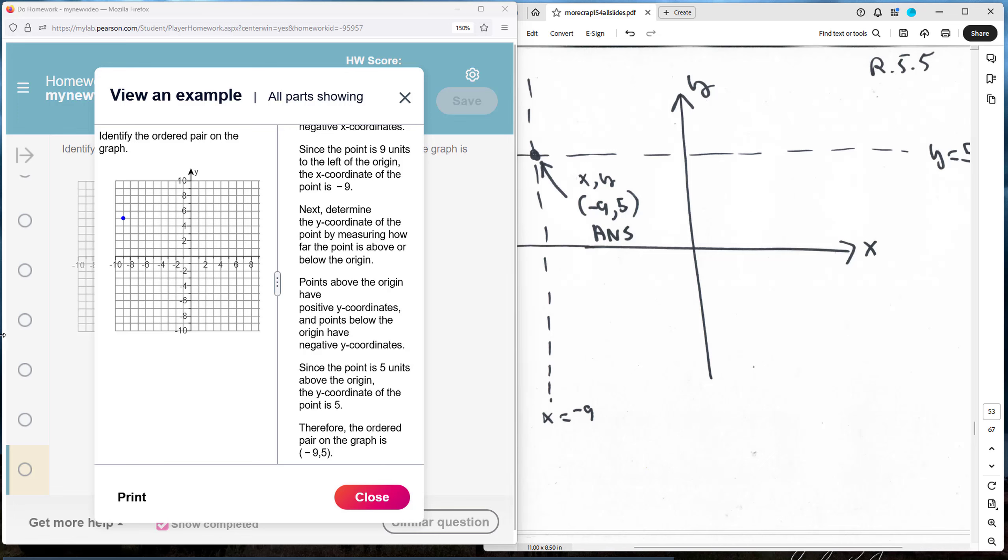Each ordered pair is going to represent each point on the grid here. This will be represented by an ordered pair where the first number is the x coordinate and the second number is the y coordinate.